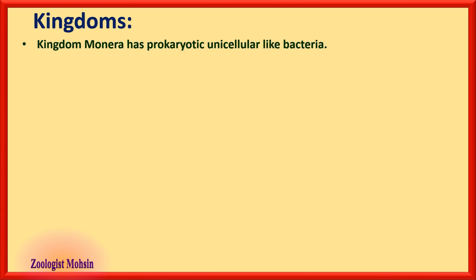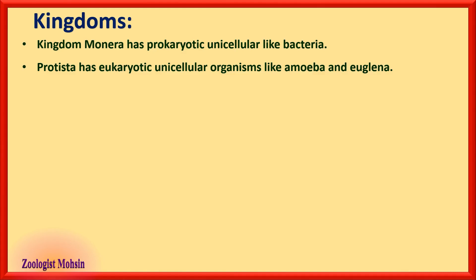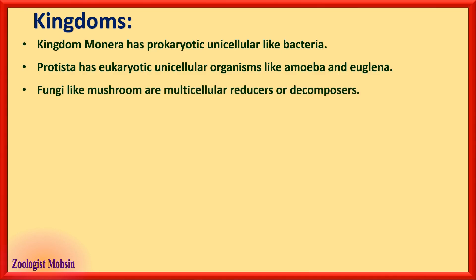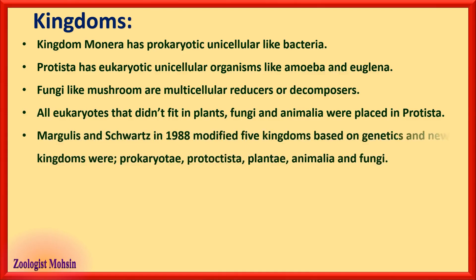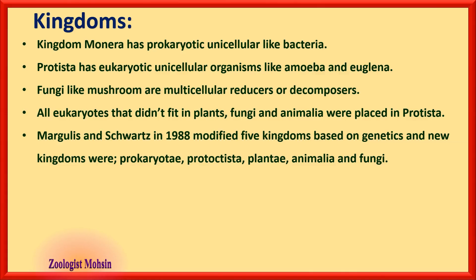Kingdom Monera has prokaryotic unicellular organisms like bacteria, while Protista has eukaryotic unicellular organisms like Amoeba and Euglena. Fungi like mushrooms are multicellular reducers or decomposers. All eukaryotes that didn't fit in plants, fungi, and Animalia were placed in Protista. Margulis and Schwartz in 1988 modified the five-kingdom system based on genetics, renaming the kingdoms to Prokaryotae, Protista, Plantae, Animalia, and Fungi.